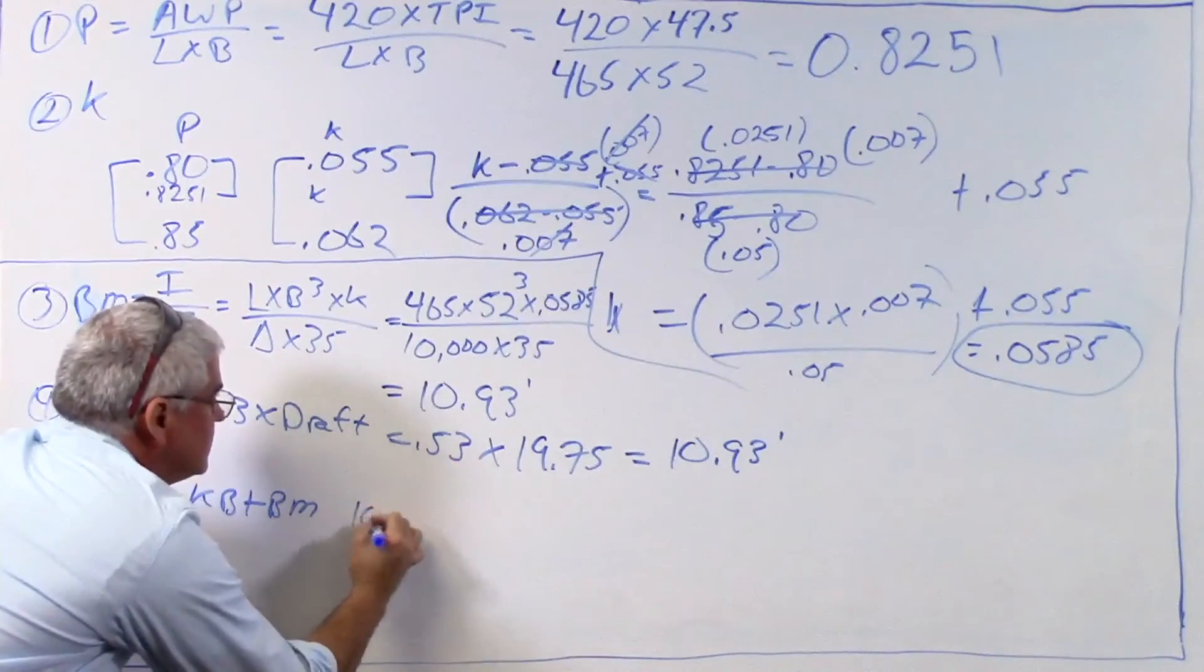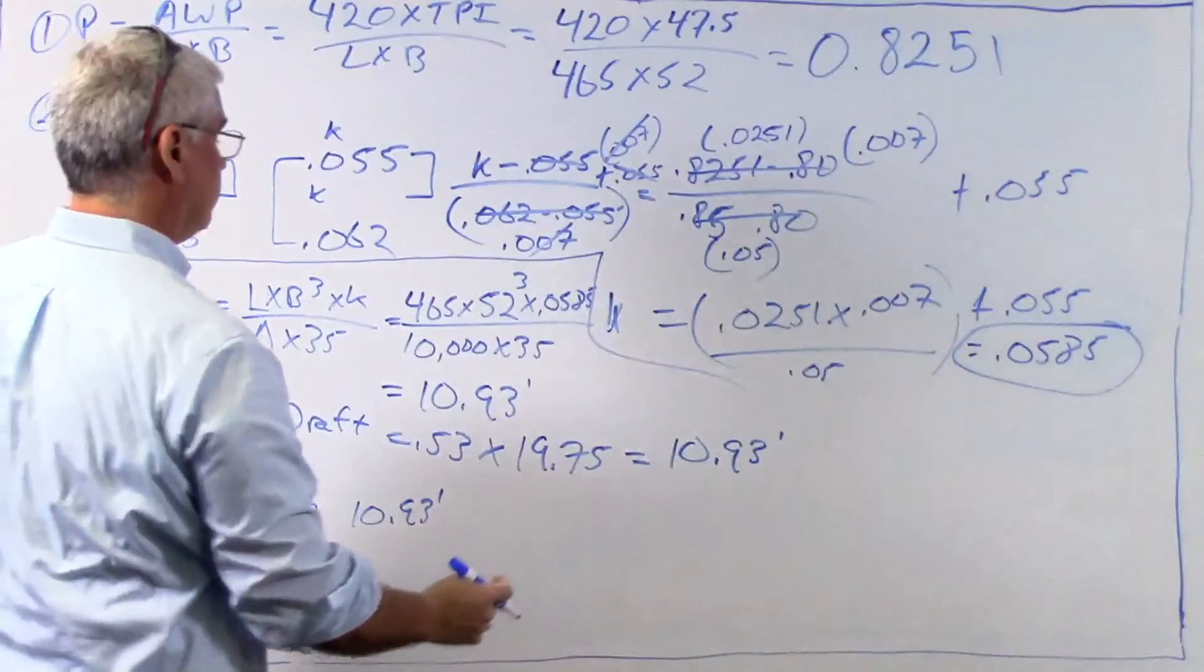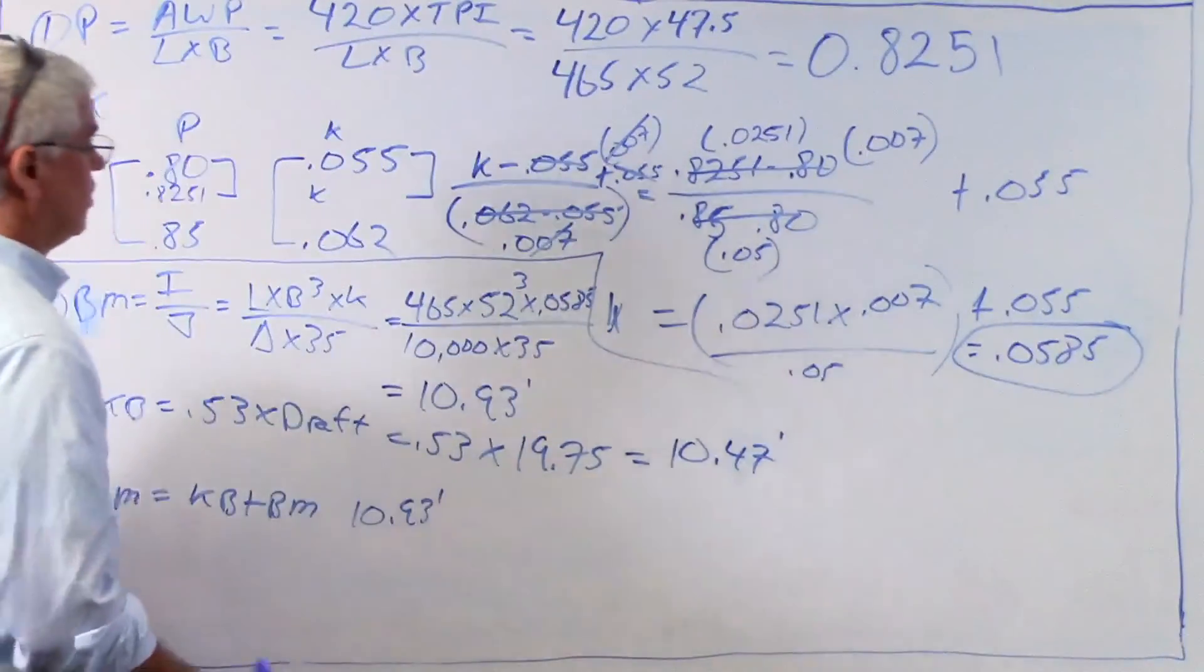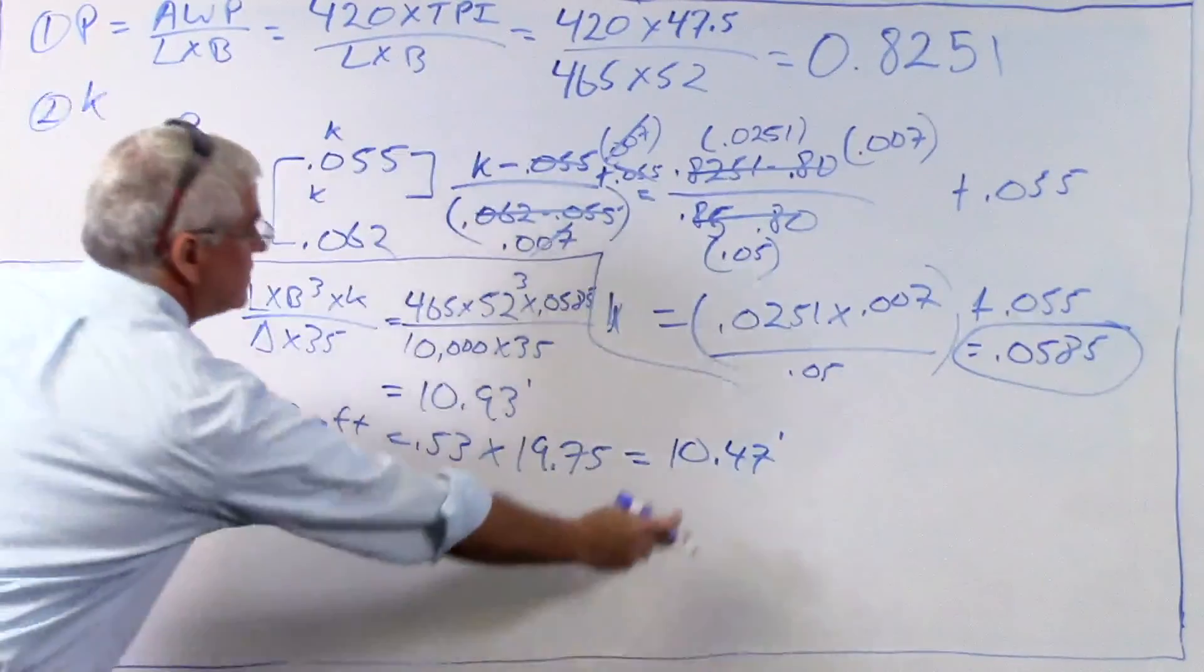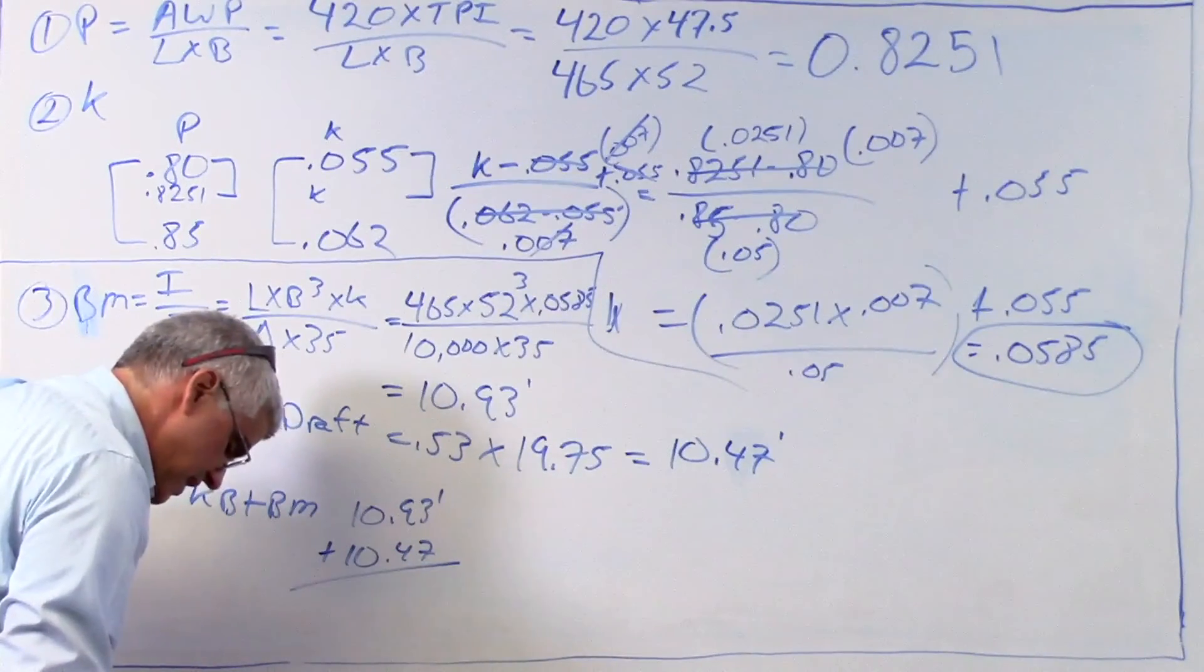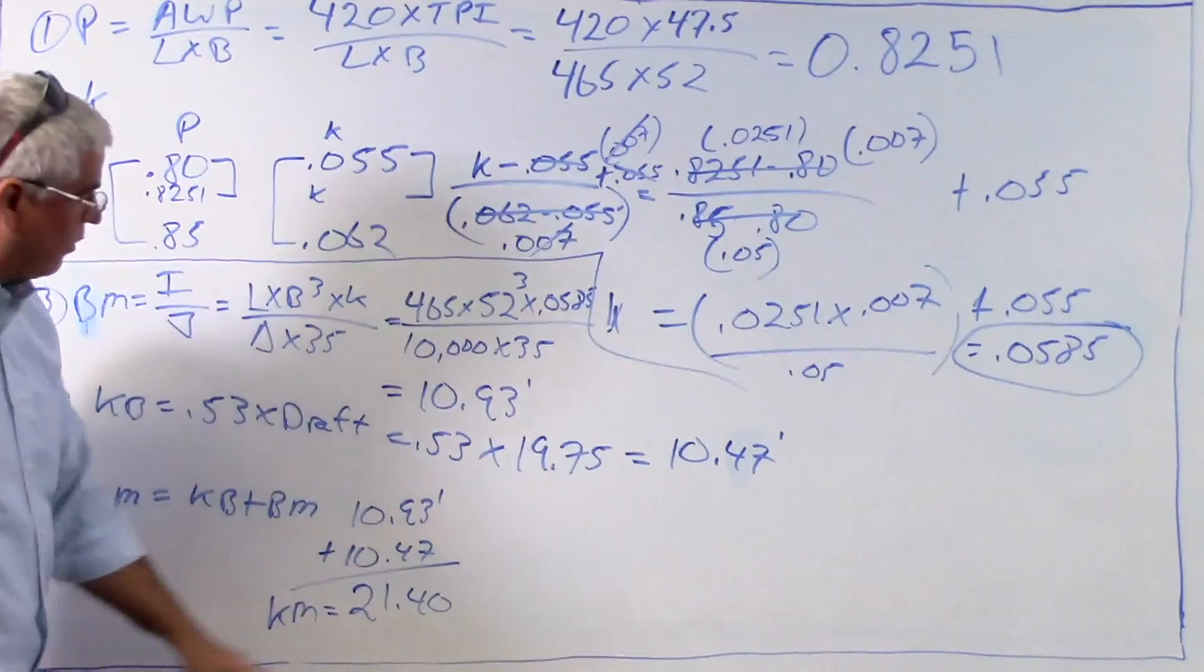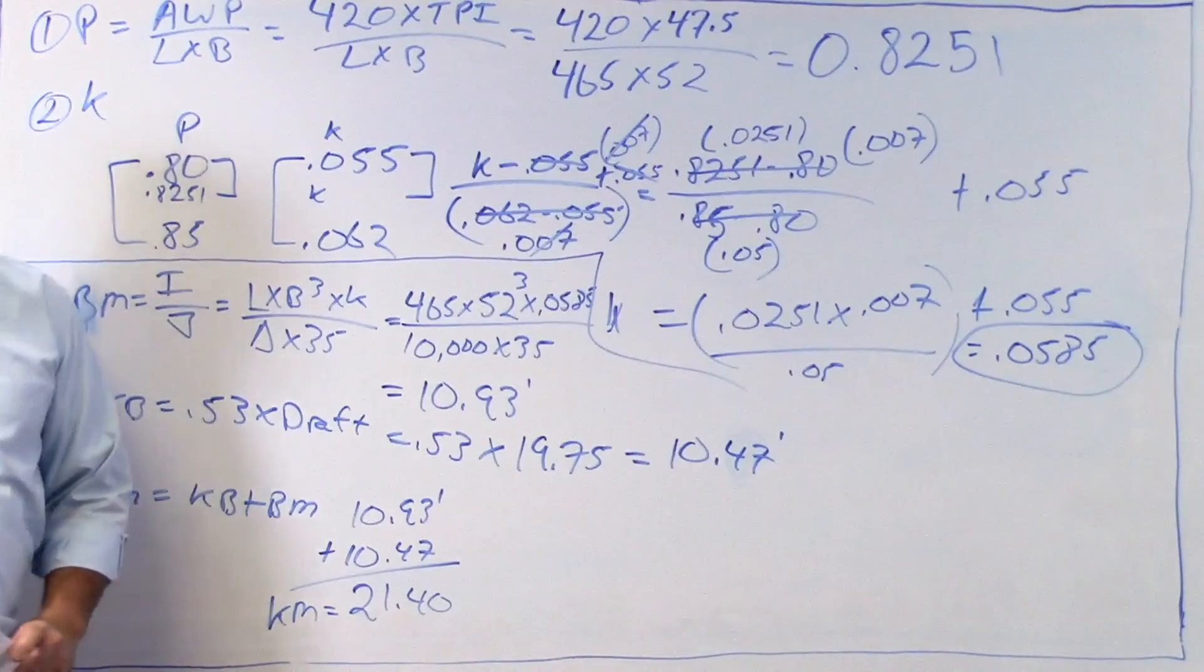Well, kb was 10.93 feet and, oh, excuse me, this is 10.47. My apologies. So when you do that math, that should be 10.47. My apologies. So this is 10.93. This is 10.47. I'm going to add those. And when I do that, I get km, 21.4 feet. And I would round that up to the nearest tenth of a foot. So in this case, there's nothing to do. It's just 21.4.